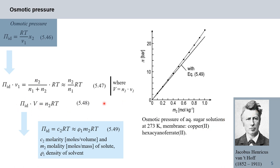Returning to van't Hoff's equation, we can bring equation 548 into a slightly different form by replacing the molarity of the solute C₂ with the molality M₂ times the density of the solvent rho₁. This gives equation 549: pi_id equals C₂ RT, which is approximately equal to rho₁ times M₂ times RT, where C₂ is the molarity, M₂ is the molality of the solute, and rho₁ is the density of the solvent.